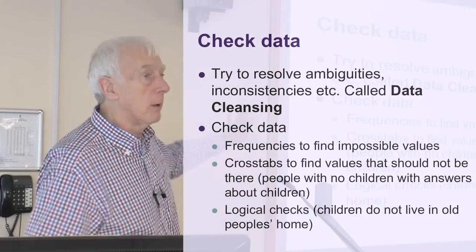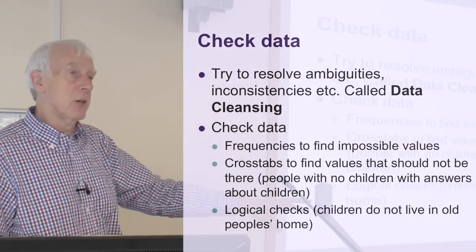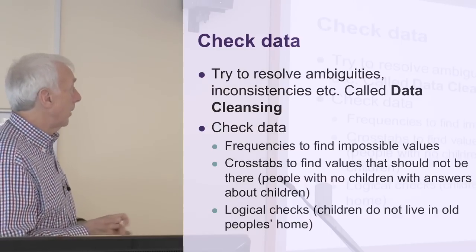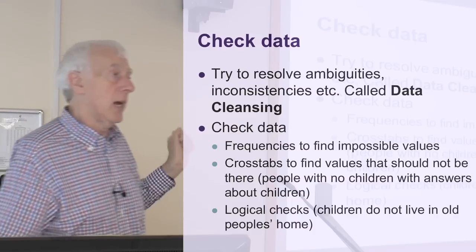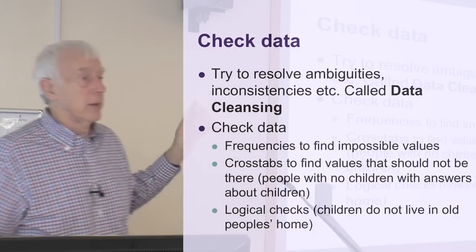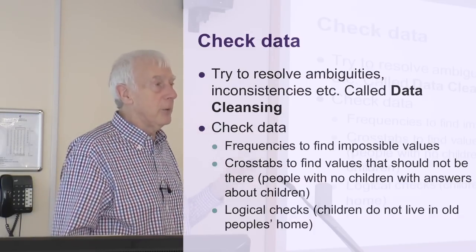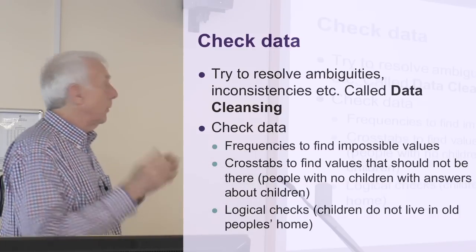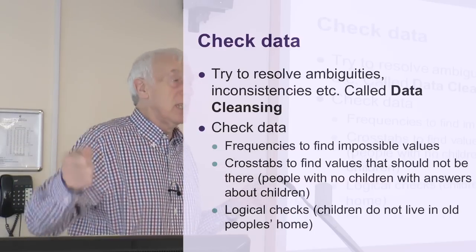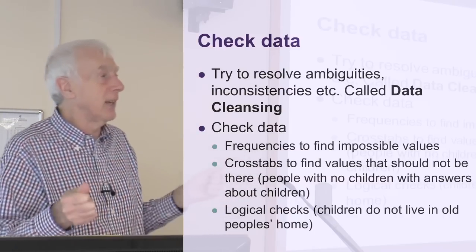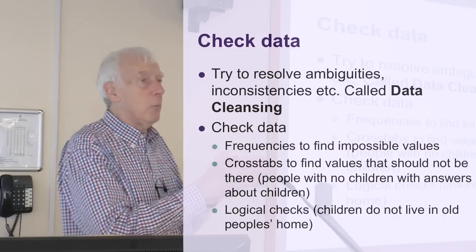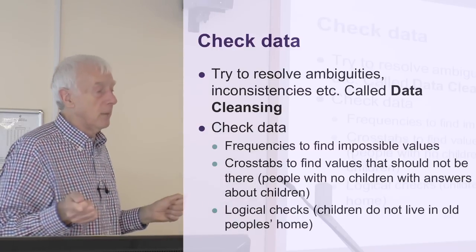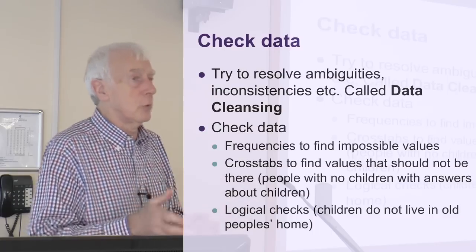What I've given you here are three ways you might do that checking. You can go back by hand against the questionnaire — that's why you number the paper questionnaires — or go back to the online version for an online survey. You can also do frequencies: going through and displaying how many of each category — how many ones, twos, threes, fours, and so on. If you find a value of seven that you didn't code, or a number 57 appearing when you only coded one to three, you know you've made a mistake. Frequencies can quickly tell you if you've got any false numbers — categories you shouldn't have at all.